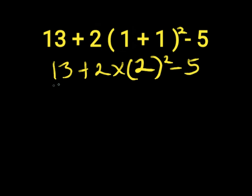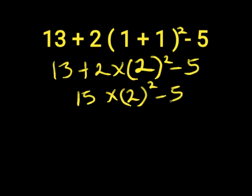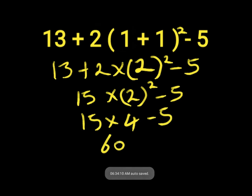So, 13 plus 2 will give us 15, then 15 times 2 to the power of 2 minus 5. So, 2 to the power of 2 is 2 times 2. 2 times 2 will give us 4, then we have 15 times 4 minus 5. So, 15 times 4 is 16, then 16 minus 5 will give us 55.